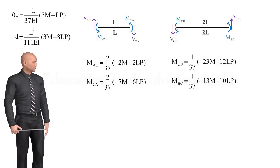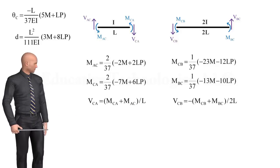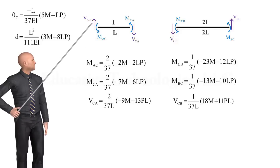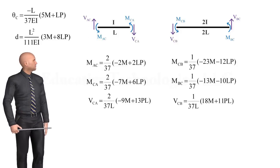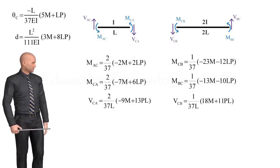Also, since we already have VCA and VCB in terms of the member-end moments, we can easily determine the shear forces in terms of M and P. Knowing that VAC equals VCA and VBC equals VCB, we can write...